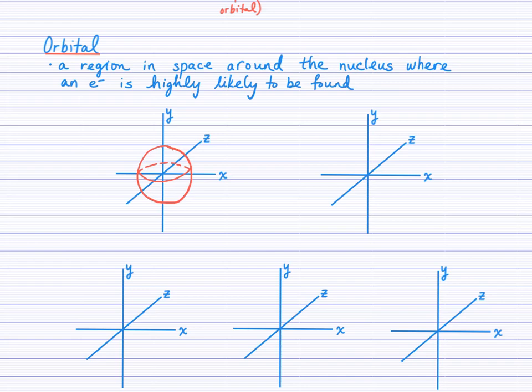So this is an S orbital, and in particular I'm going to call it the 1S orbital. If I were to draw a larger sphere, so one that reaches further from the nucleus, then I would indicate that this is the 2S orbital.